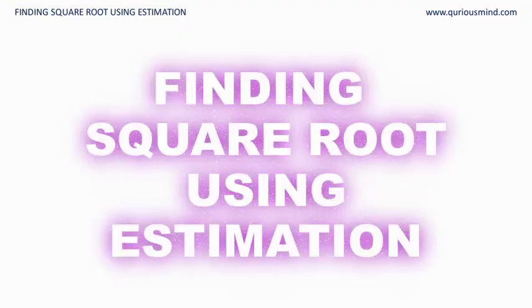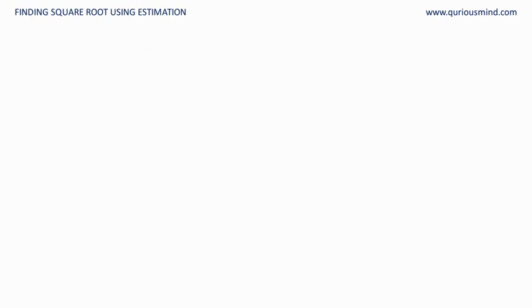Hello everyone. In this video, we will learn a method to find square root using estimation. When we use this method, we must know that the number for which we are trying to find the square root is a perfect square. If we know that it is a perfect square, then we can find the square root using the estimation method.